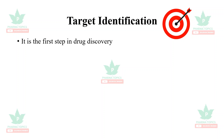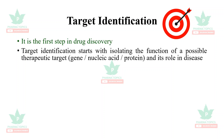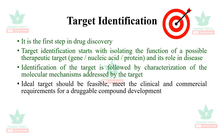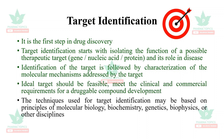Target identification is the first step in drug discovery. It starts with isolating the function of a possible therapeutic target — it may be a gene, nucleic acid, or protein — and its role in the disease. Identification of the target is followed by characterization of the molecular mechanisms addressed by the target. The ideal target should be feasible and meet the clinical and commercial requirements for a druggable compound development.